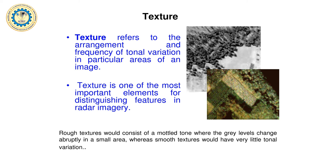Texture refers to the frequency of tone variation in a particular area of the image. In agriculture land you get uniform texture because plant heights are the same, but in forest land you get rough texture because plant heights vary. In a bungalow colony where all building heights are the same, you get smooth texture, while areas with building height variations show rough texture.